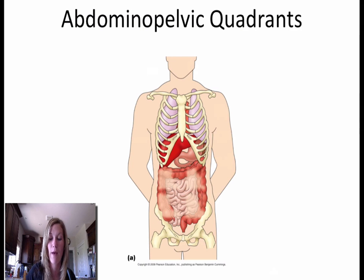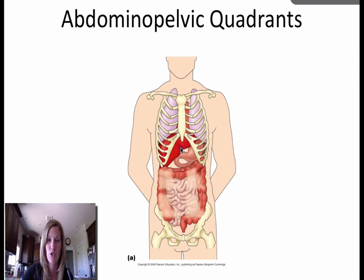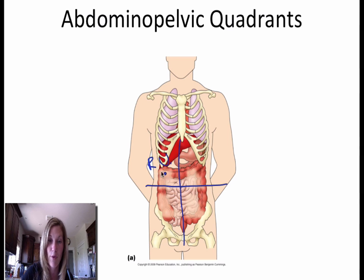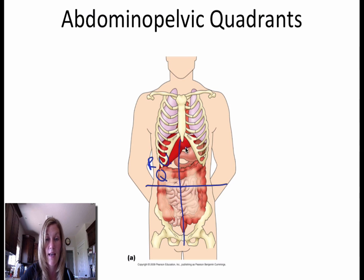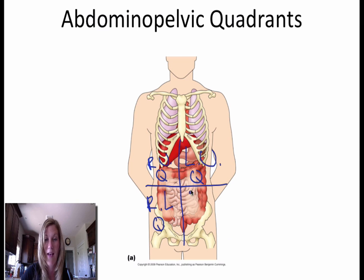Now we have the abdominal pelvic quadrants. If we divide them into four quadrants: this is going to be the right upper quadrant — I know it's on the left side visually, but it's on the patient's right side. This then is going to be the left upper quadrant. So then this is going to be the right lower quadrant and the left lower quadrant.